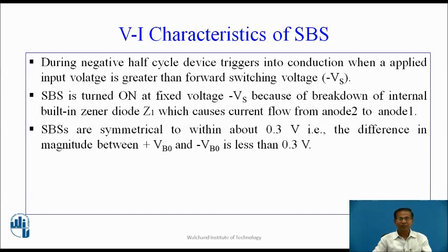During the negative half-cycle, the device triggers into conduction when the applied input voltage is greater than the forward switching voltage, that is minus VS. SBS is turned on at fixed voltage minus VS because of breakdown of the internal built-in Zener diode Z1, which causes current flow from Anode 2 to Anode 1. Silicon bilateral switches are symmetrical to within about 0.3 volt — that is, the difference in magnitude between plus VBO and minus VBO is less than 0.3 volt.